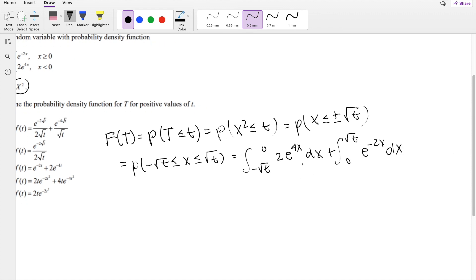Okay, so the anti-derivative is going to be 2e to the 4x divided by 4, integrating from negative root t to 0. And this side right here is going to be negative 1 half e to the negative 2x, evaluating from 0 to root t.